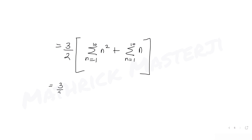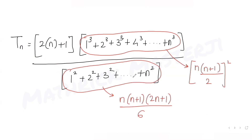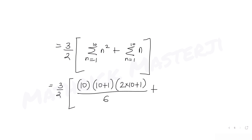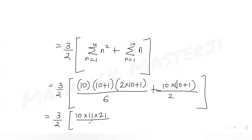For the sum of n² from n = 1 to 10, using the formula n(n+1)(2n+1)/6, we get 10 × 11 × 21 / 6. For the sum of n from n = 1 to 10, using n(n+1)/2, we get 10 × 11 / 2. Cancelling: 10 and 2 gives 5, and 21/3 gives 7, so we get 7 × 11 × 5 = 385.